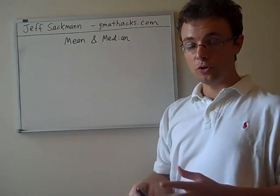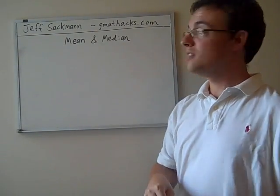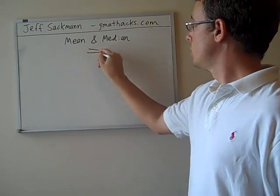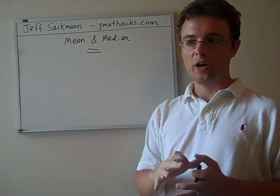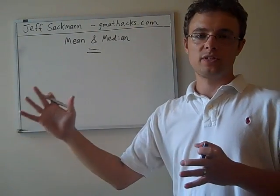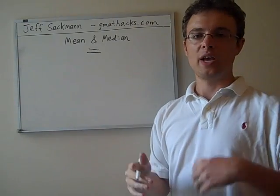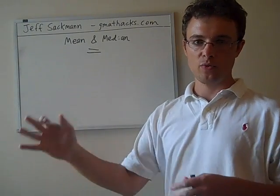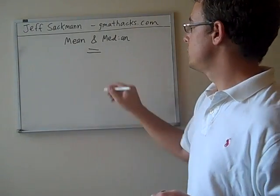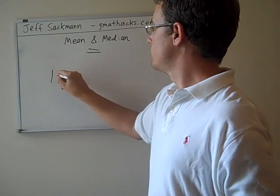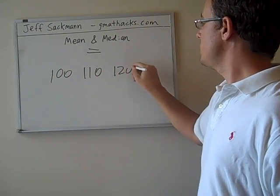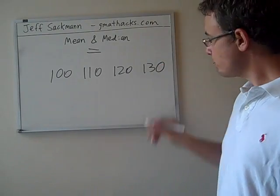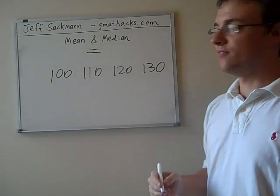So another example I want to show you is when the mean and the median are equal. As we've seen, I just showed you a couple sets where there was one number skewing it on the top end. So we had 100, 110, and 300. But look what happens if we have, let's say, three consecutive numbers. Four consecutive numbers, rather.